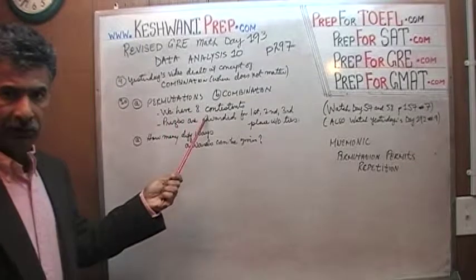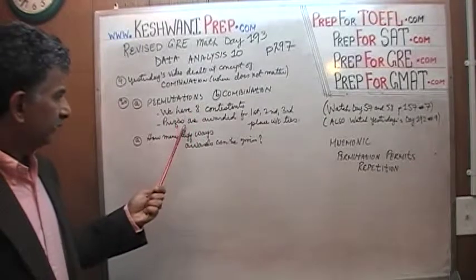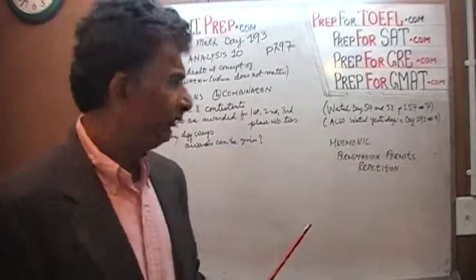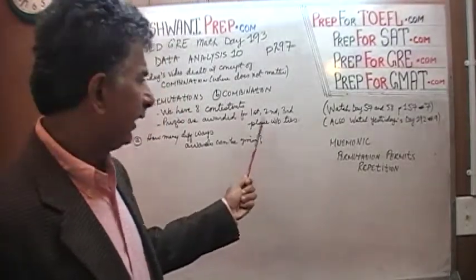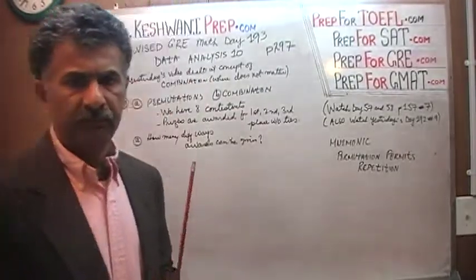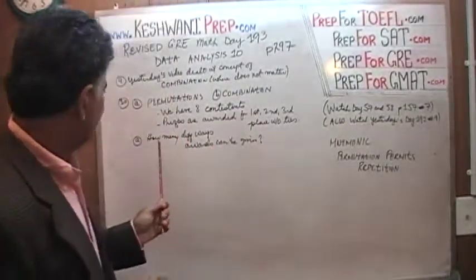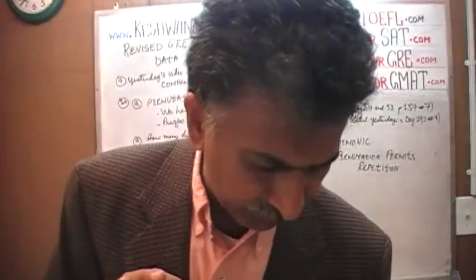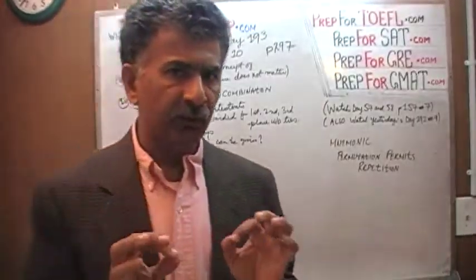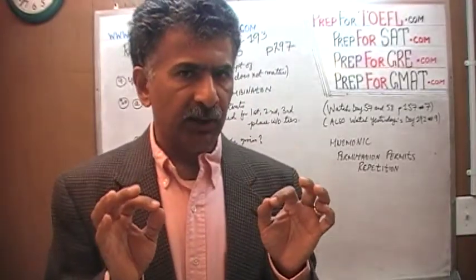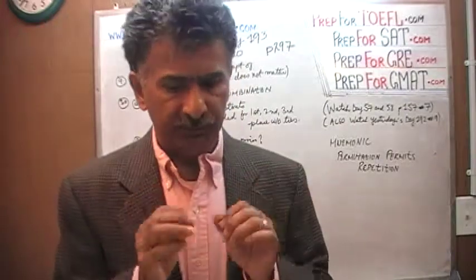Here's today's problem. We have 8 contestants. Prizes are to be awarded for 1st, 2nd, and 3rd prize without ties. The question is very straightforward: how many different ways can awards be given? Now you have to decide from the context whether we're dealing with permutation or combination.